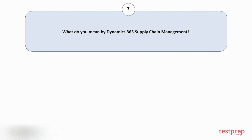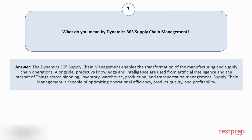Question number 7: What do you mean by Dynamics 365 Supply Chain Management? The Dynamics 365 Supply Chain Management enables the transformation of the manufacturing and supply chain operations. Alongside, predictive knowledge and intelligence are used from artificial intelligence and the internet of things across planning, inventory, warehouse, production, and transportation management. Supply chain management is capable of optimizing operational efficiency, product quality, and profitability.